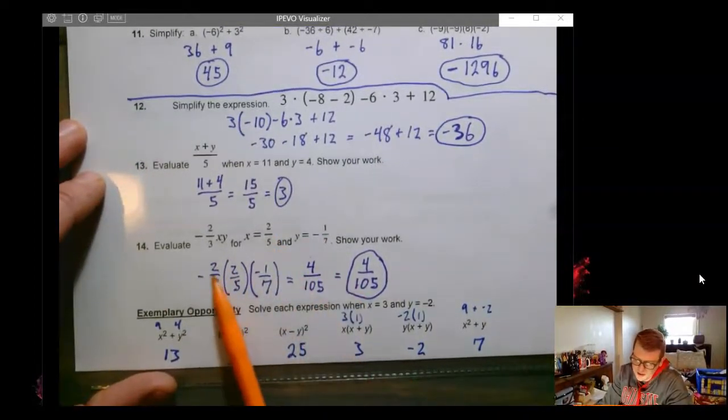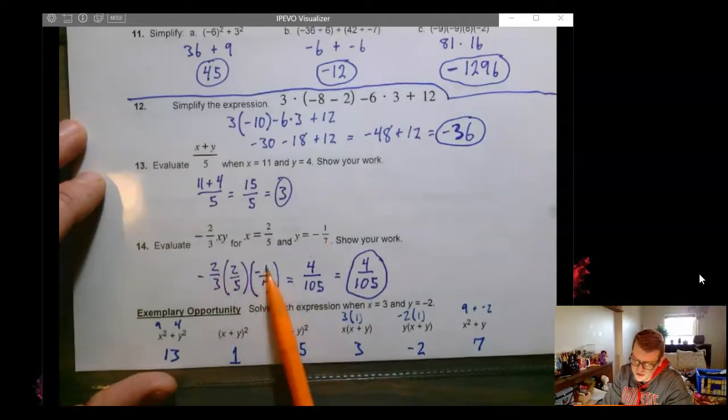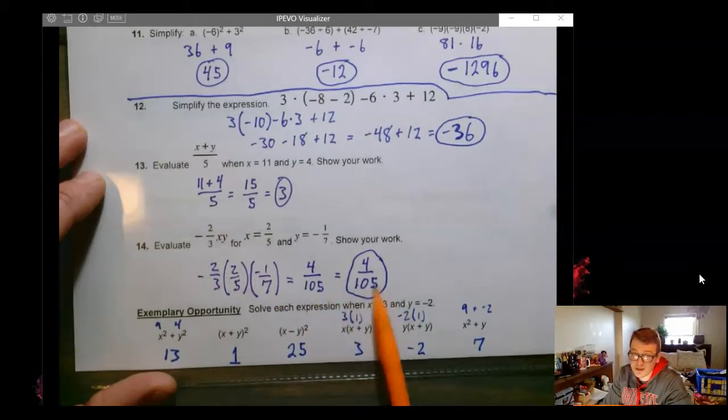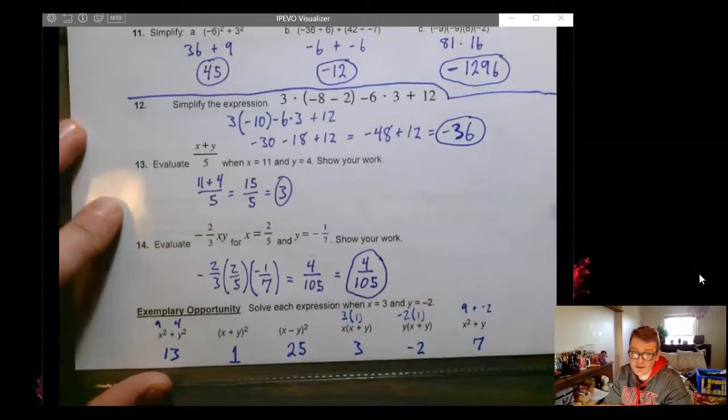Here we plug in the fractions and we just go straight through the numerators, straight through the denominators. We have two negatives. So we're going to get a positive. And 4 over 105 does not reduce. So our answer just stays 4 over 105.